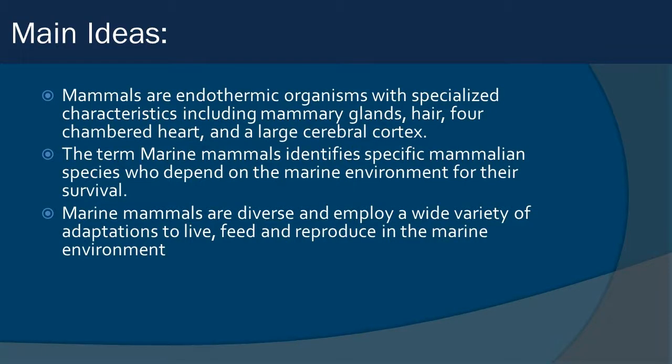The main ideas today: first, what are mammals? You are one, by the way. Mammals are endothermic organisms with specialized characteristics that include mammary glands, hair, a four-chambered heart, and a large cerebral cortex, among other things. The term 'marine mammals' identifies specific mammalian species that depend on the marine environment for their survival, and they employ a wide variety of adaptations to live, feed, and reproduce in the marine environment.